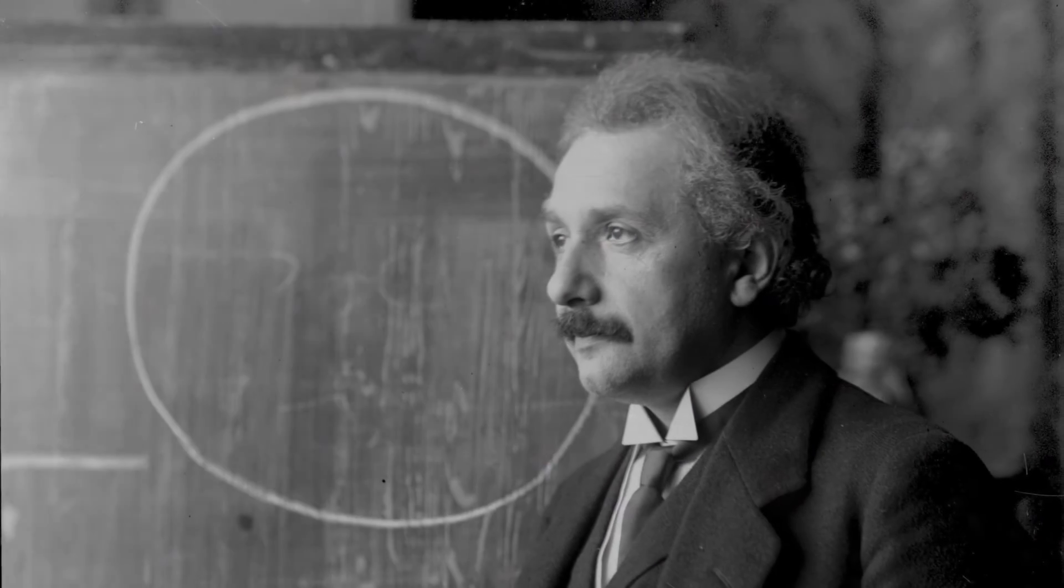In November of 1915, Albert Einstein presented his field equations of general relativity to the Prussian Academy of Science. This was a revolutionary idea in physics at the time that fundamentally changed our understanding of how the universe works.